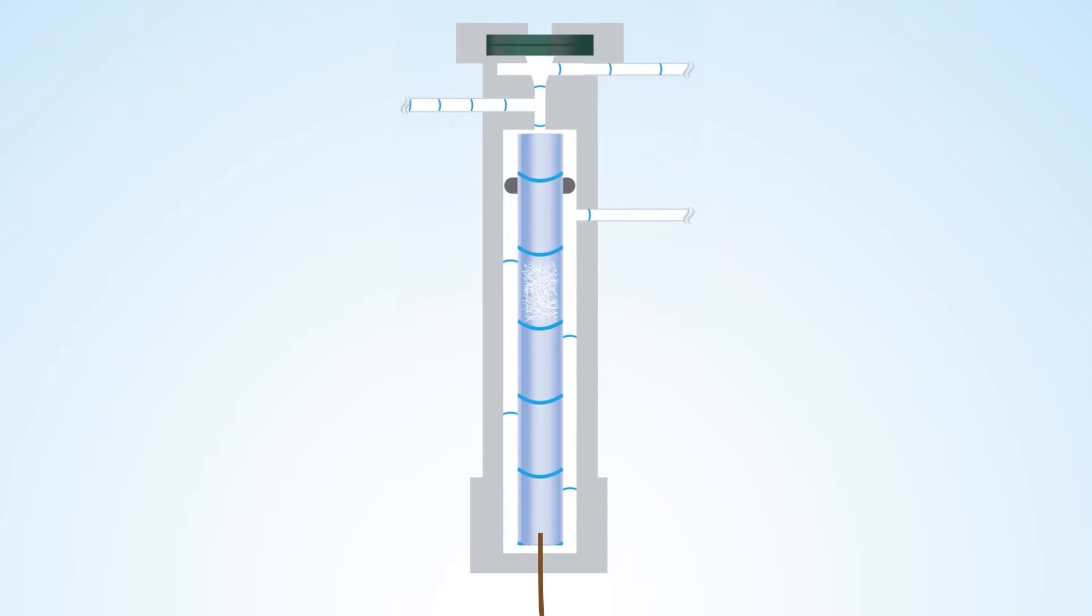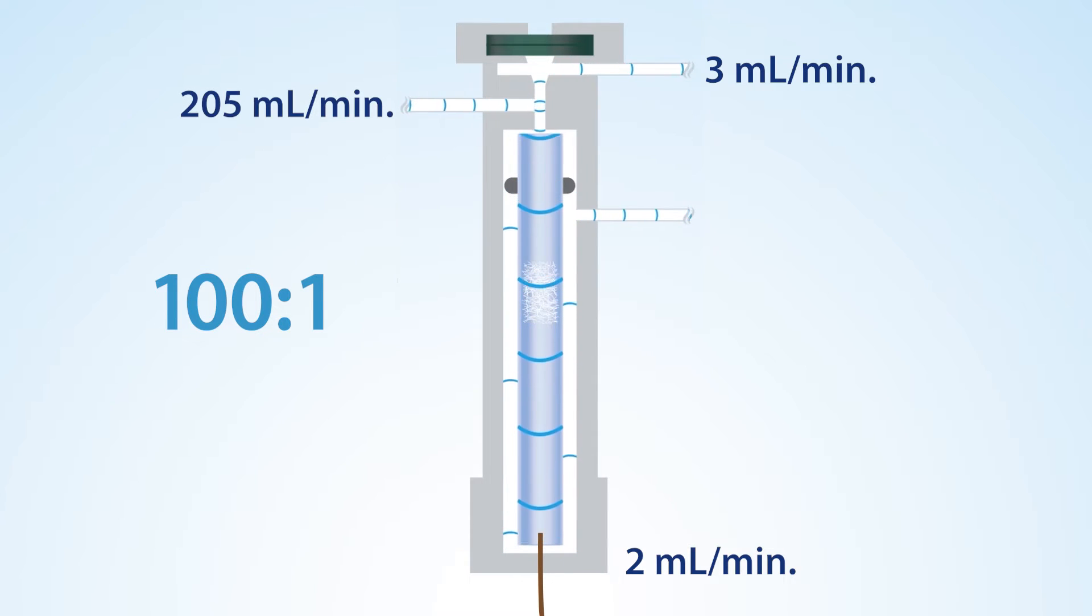Let's look at an example. Here, we're running an analysis with a 2 milliliter per minute column flow and a 3 milliliter per minute septum purge. We have a 100 to 1 split ratio and a total helium flow of 205 milliliters per minute.